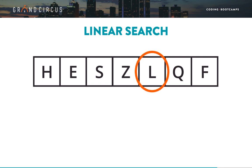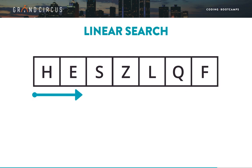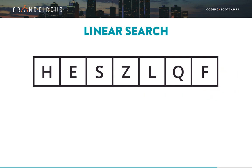We may get lucky and find it in the first spot, or we may get unlucky and have to check the entire array before we finally find it in the last spot. On average, we'll probably have to search about half the array. Although it's also possible that what we're looking for is not in the array, in which case we still have to check every slot before we find out that it's not there. This algorithm is called linear search because it goes in a straight line checking each value one by one.